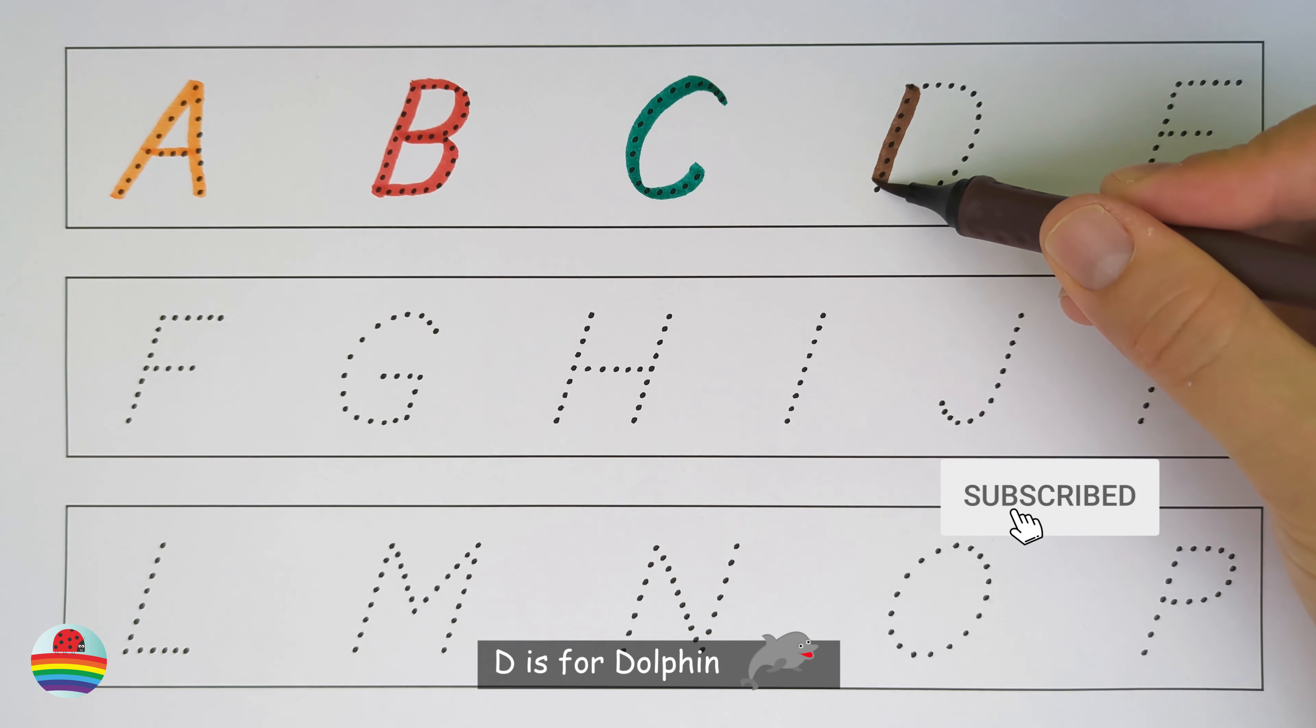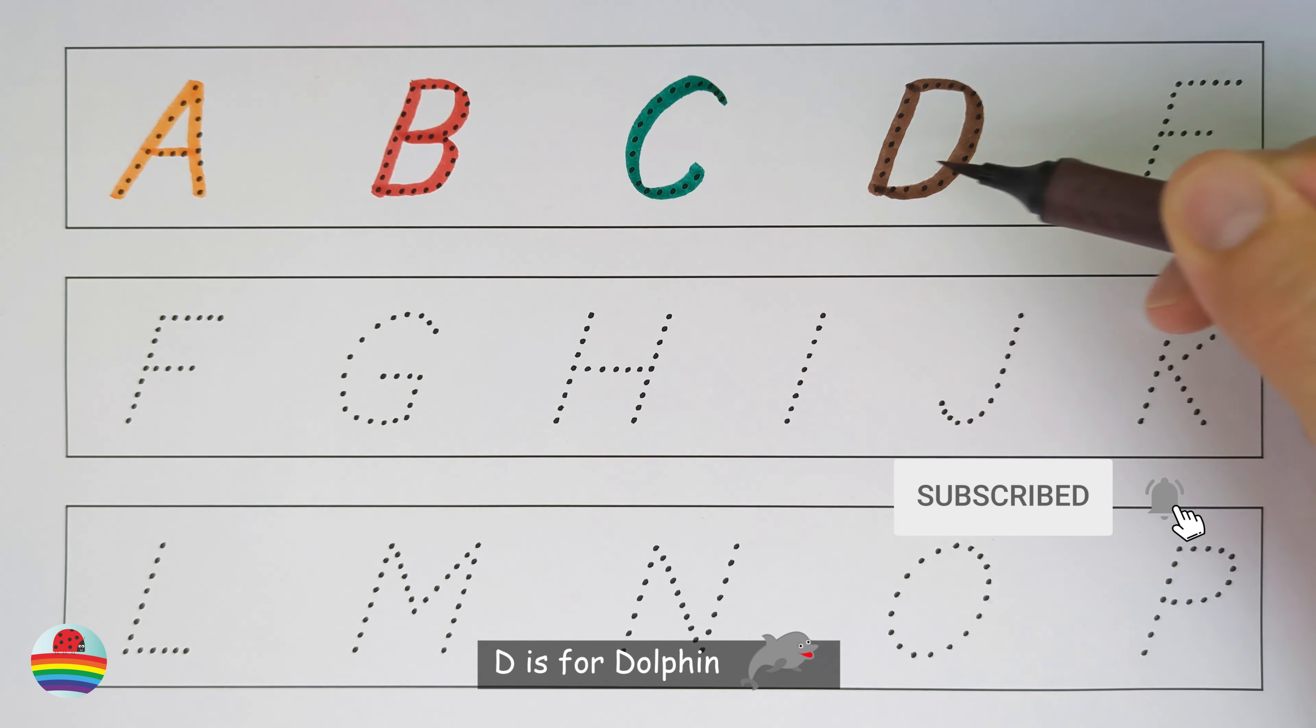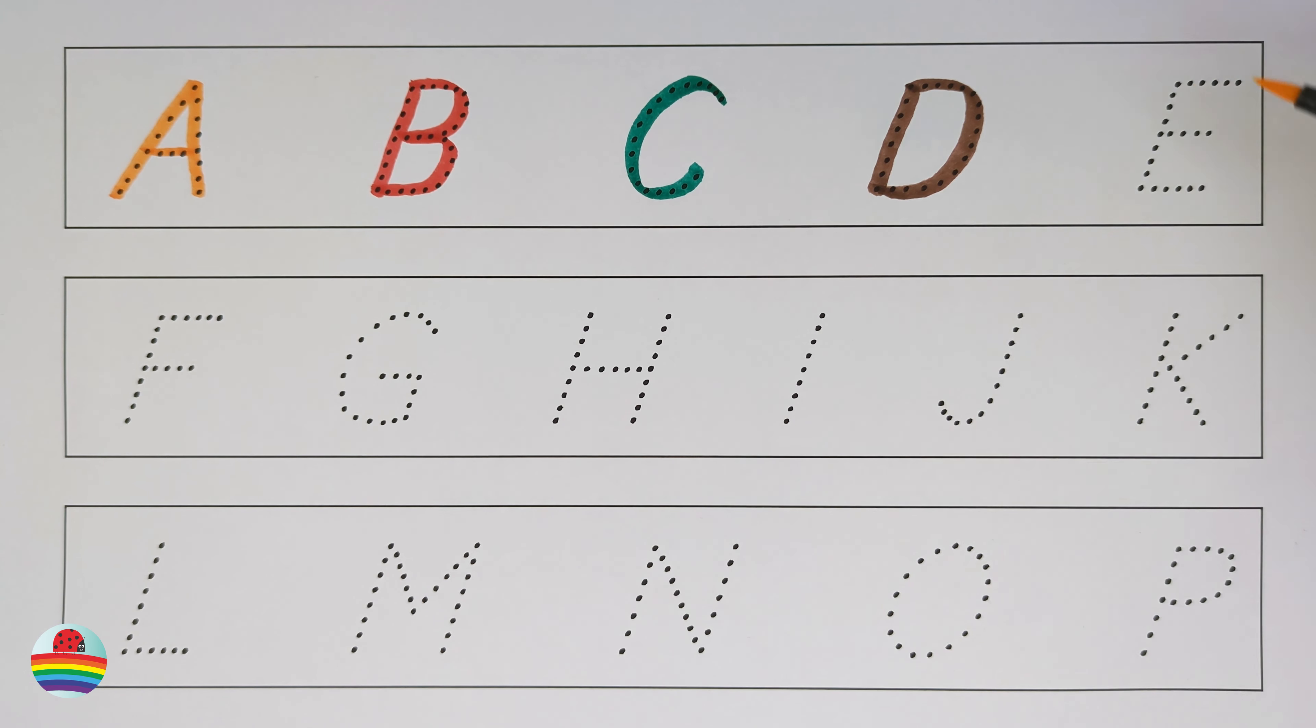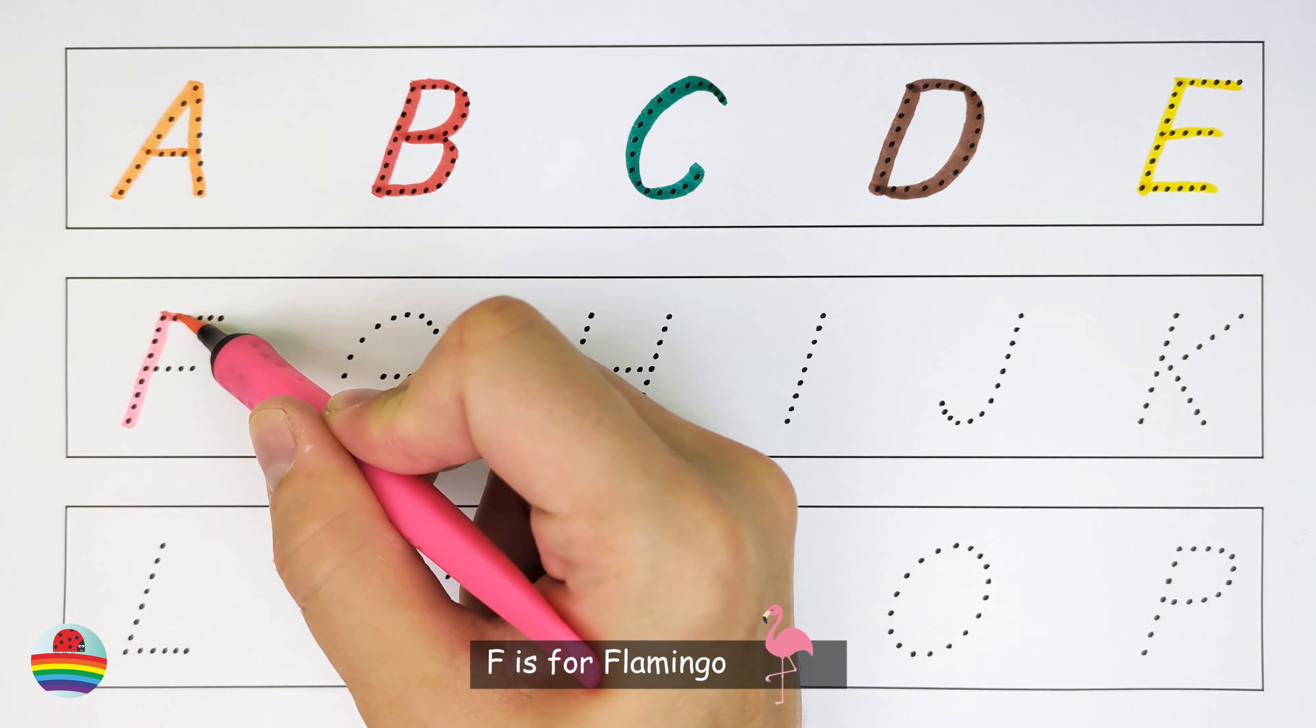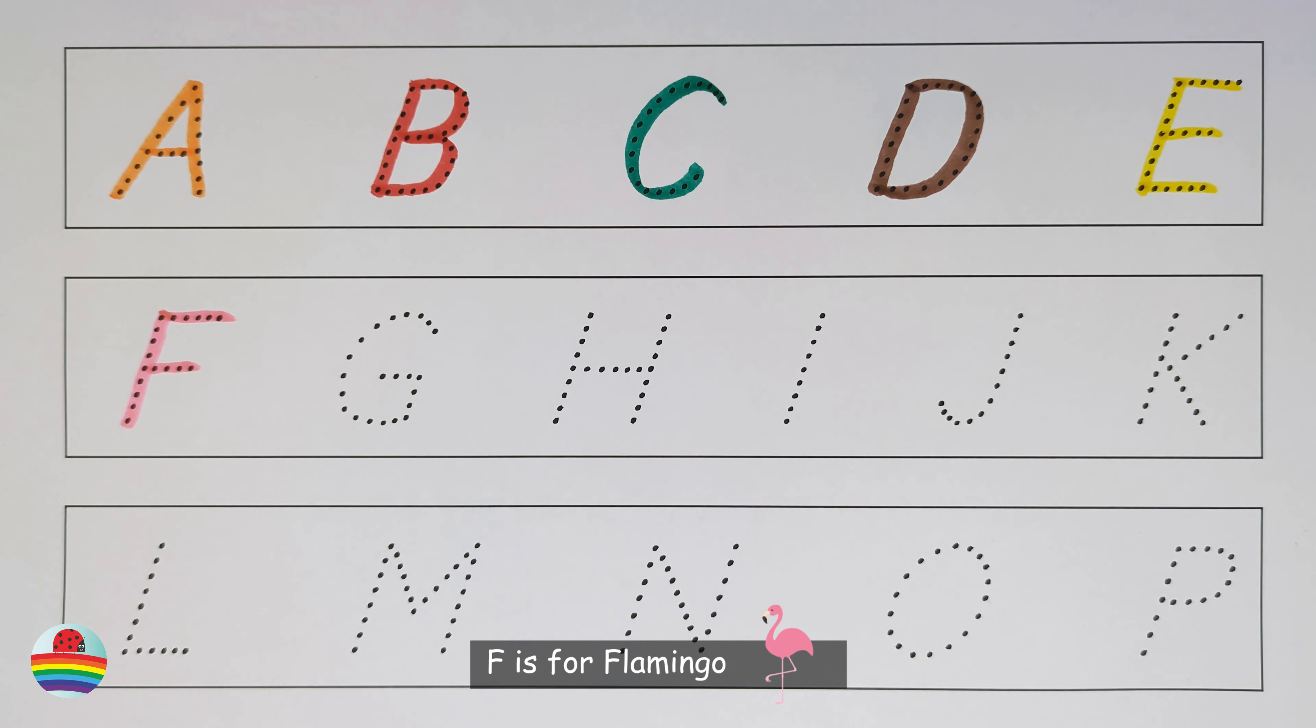D. D is for Dolphin. D. E. E is for Eagle. E. F. F is for Flamingo. F.